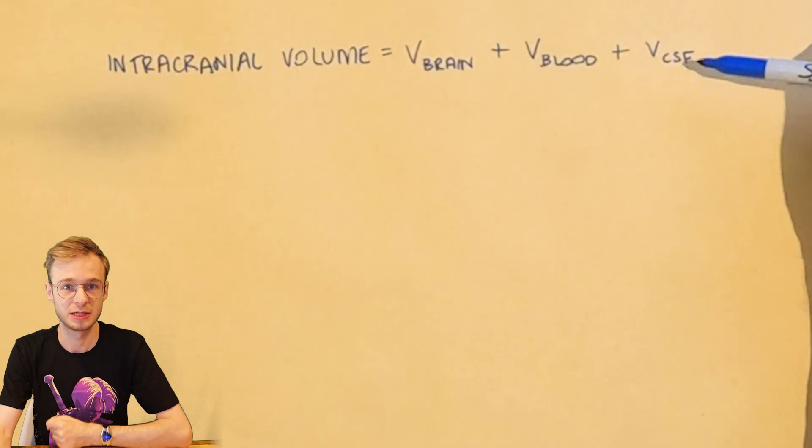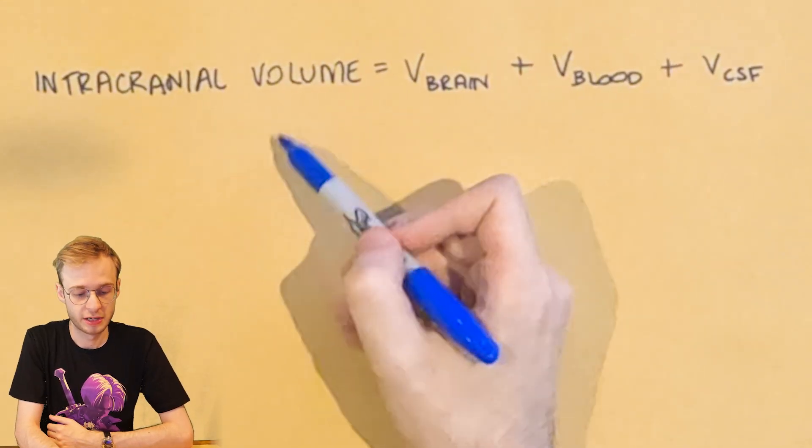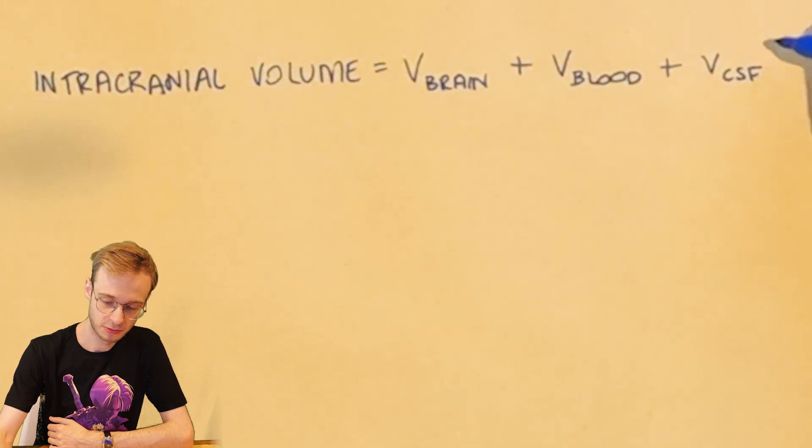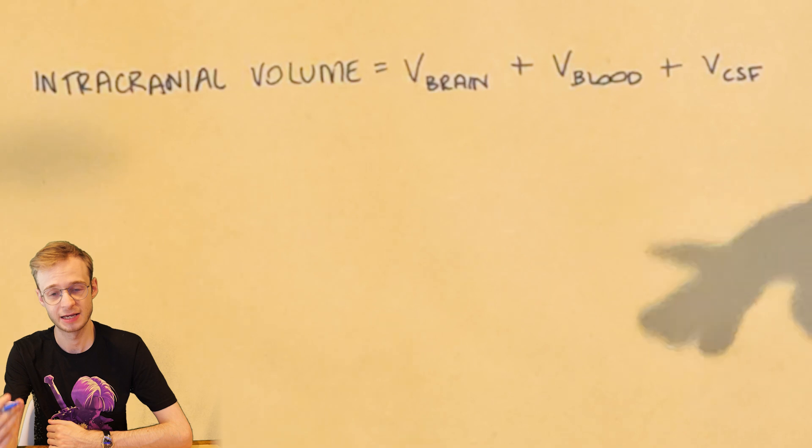So if we suddenly get a large amount of CSF, because we are hydrocephalic, because the intracranial volume is constant, that means if this one goes up, one of these two or both must go down in order to compensate.